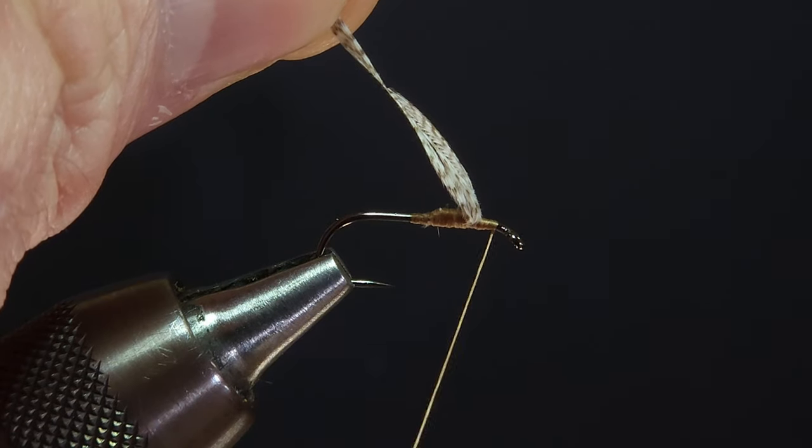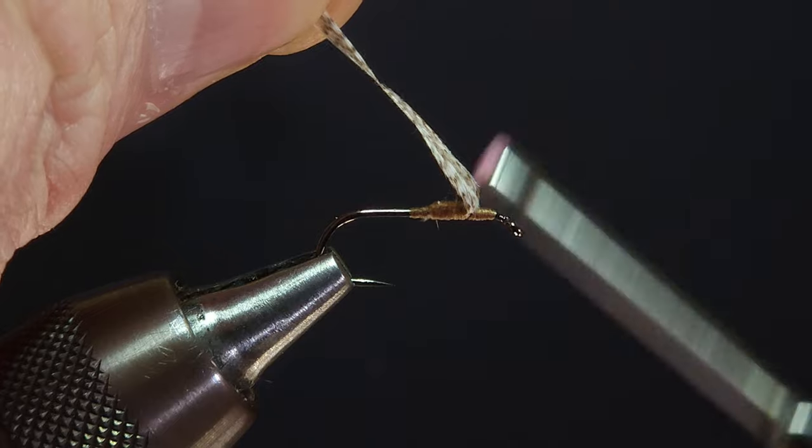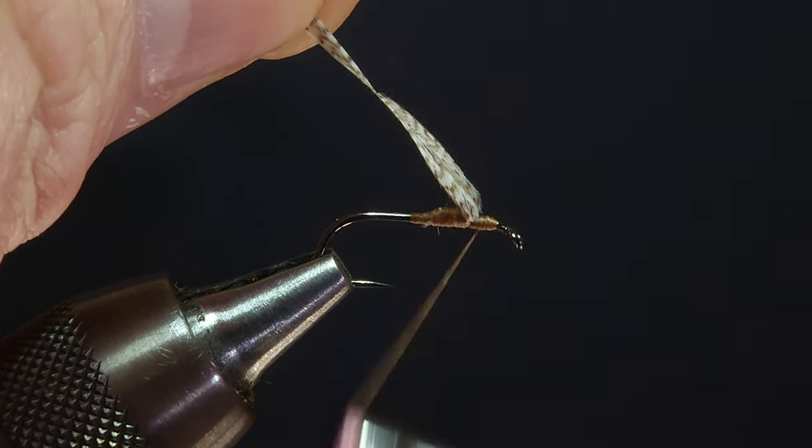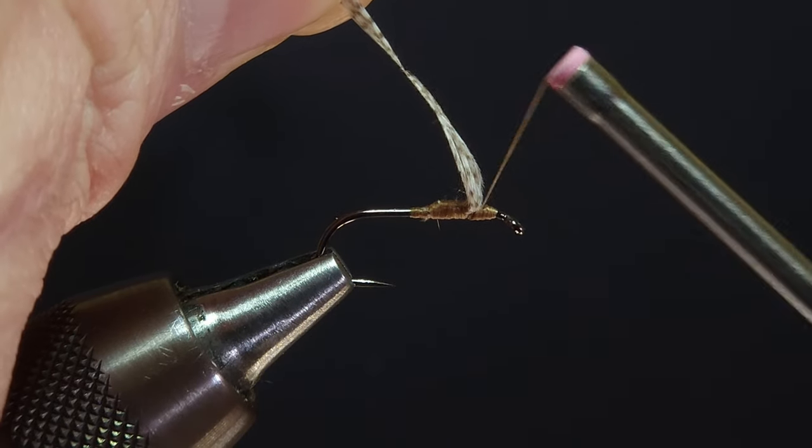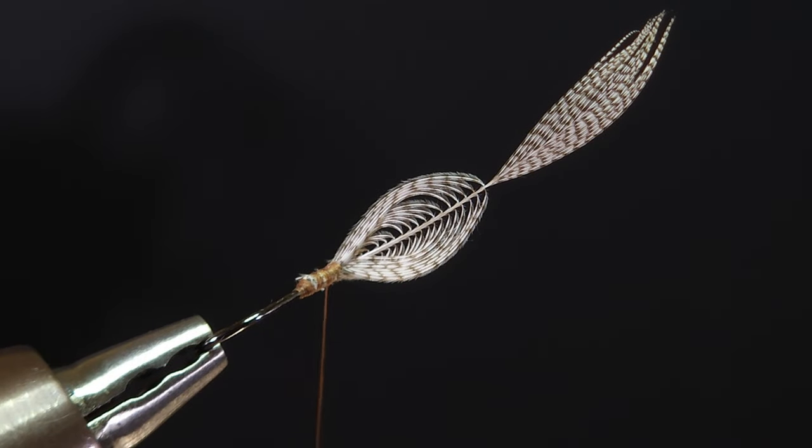While lifting up on the wing tip, I'm going to build a bit of a thread ramp in front of the wing material just to help them maintain that vertical orientation. So now we're ready to separate our wing material and create two distinct wings.